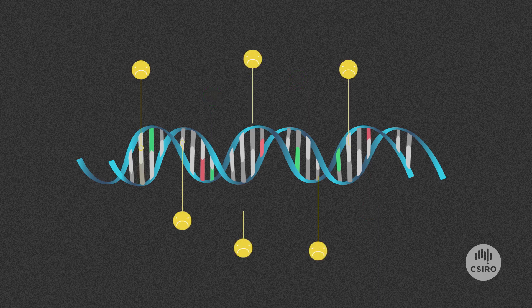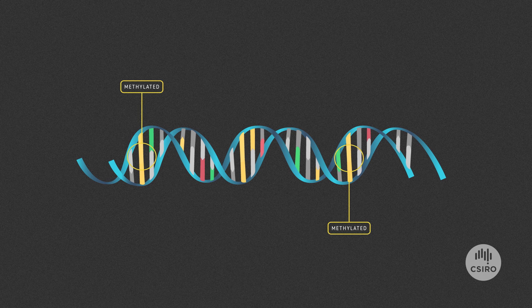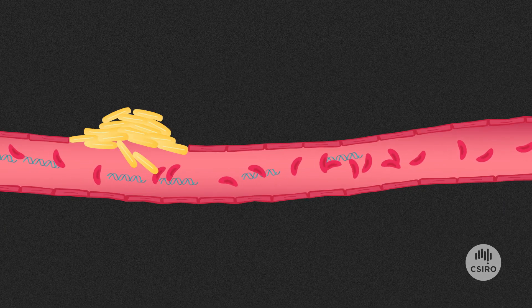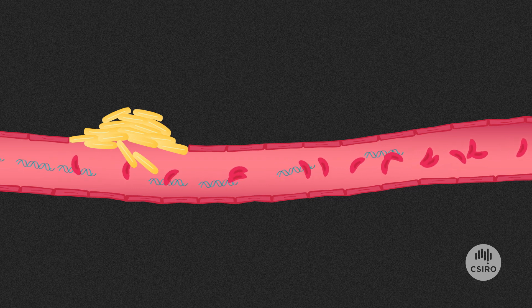But with cancer, the process often goes wrong. The team found two genes that were methylated in almost all bowel cancers. Armed with this information, they studied the blood of bowel cancer patients. Cancer cells were shedding tiny DNA fragments into the patient's bloodstream.